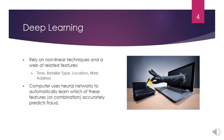But in deep learning, the computer relies on nonlinear techniques and a web of related features that might indicate fraud, including time, retailer type, geographic location, and web address. The computer uses neural networks to automatically learn which of these features, or combination of features, accurately predicts fraud.